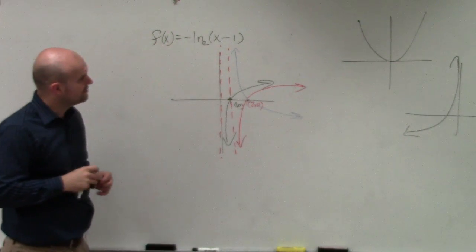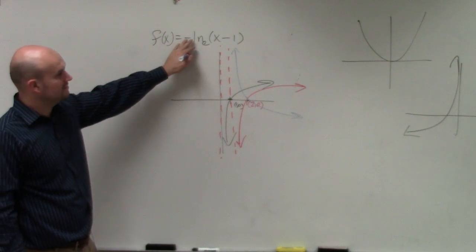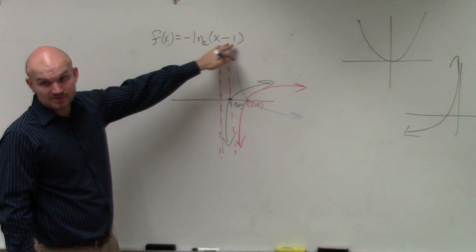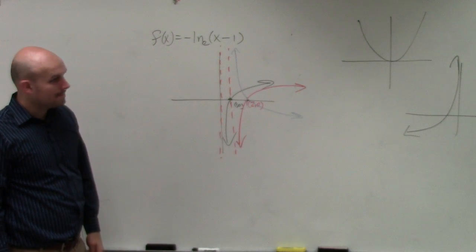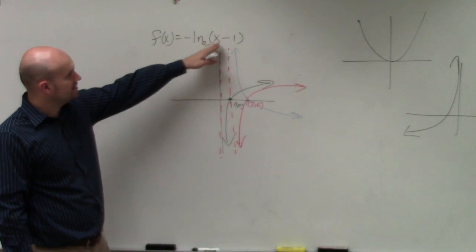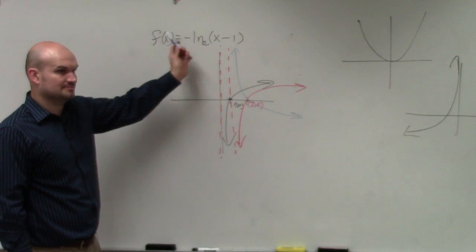So the blue graph will be what your graph would look like. Does everybody see why it's negative? That reflects it. And then the minus 1 shifts it to the right. The red graph is me just doing the transformation to the right, but then I had to reflect it at the end.